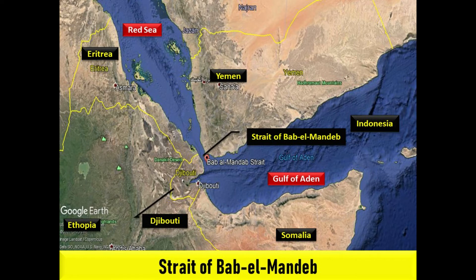The Strait of Bab el-Mandeb is a strait between Yemen on the Arabian Peninsula, and Djibouti and Eritrea in the Horn of Africa. It connects the Red Sea to the Gulf of Aden. The strait derives its name from the dangers attending its navigation or, according to an Arab legend, from the numbers who were drowned by an earthquake that separated the Arabian Peninsula from the Horn of Africa. The Bab el-Mandeb acts as a strategic link between the Indian Ocean and the Mediterranean Sea via the Red Sea and the Suez Canal.